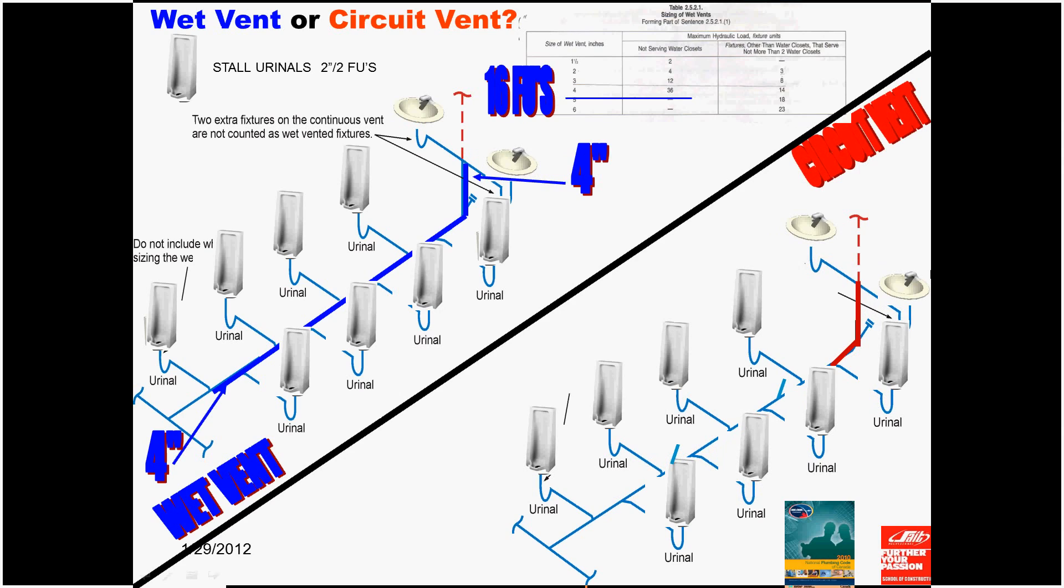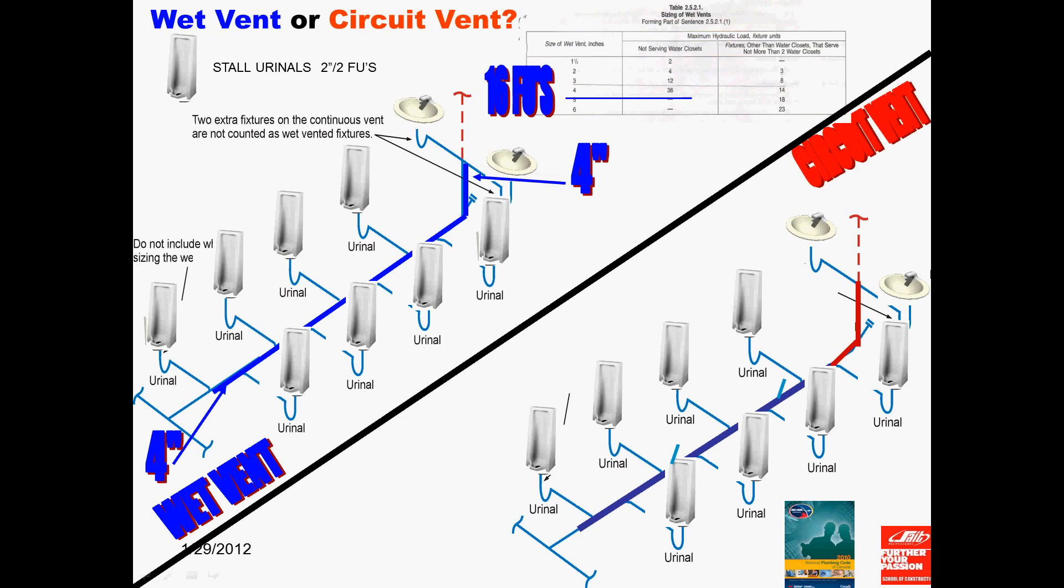Here is the circuit vent. It goes down to the lowest soil or waste pipe or the horizontal soil or waste pipe connection and continues up either to the vent stack, stack vent header, or outside air. That is the red part. The red is the wet portion of the circuit vent. That is the solid line. The dotted line is the dry portion of the circuit vent.